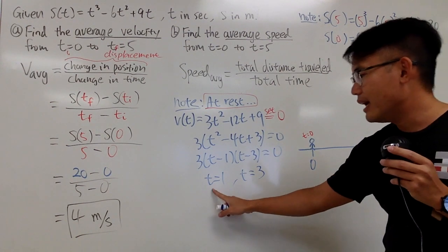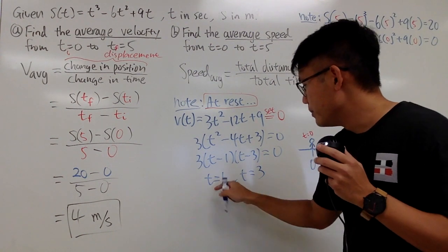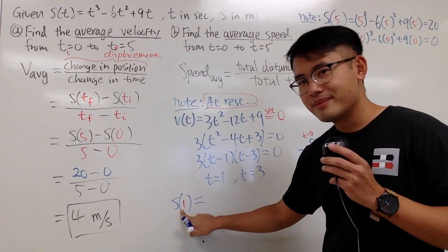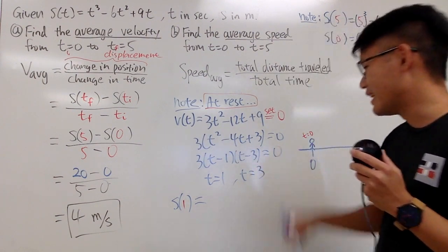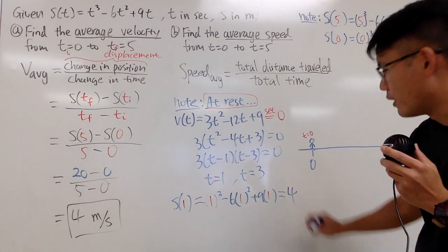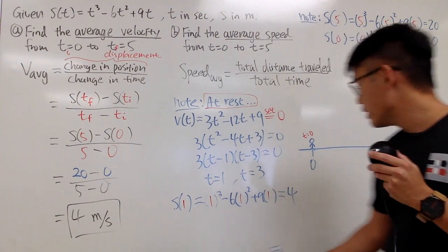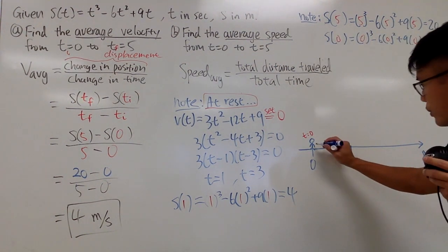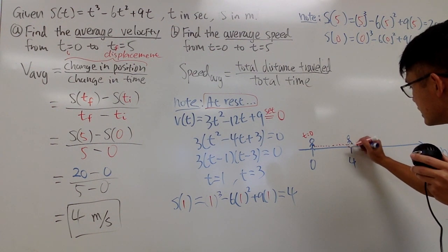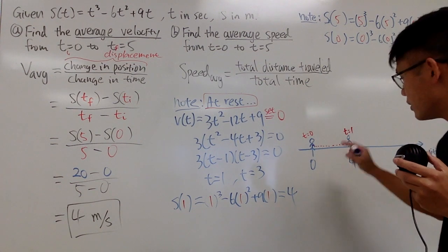Originally, s of 0 is 0. That means this particle is at 0. Let me indicate t equals 0 right here. Next, you have to figure out s of 1. Let me put this down. I care about the position, so I will write this down. s of 1. Do not plug in 1 into the velocity. Plug in 1 into the s function, and you get 4. This 4 tells you at times equal to 1, you are right here at 4. You pretty much went from here to here during the first second. So how far do you travel? 4 meters.